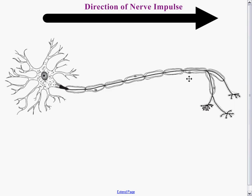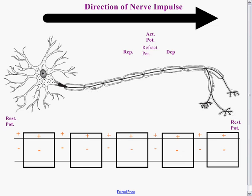Now how exactly does it speed up the nerve impulse? We can't work at that scale, so we're going to go to a different model. We've set up a diagram to represent the axon. Each one of these square boxes represents an individual piece of the myelin sheath — so each box is a separate Schwann cell. In between, we have areas not protected by a Schwann cell. These are known as nodes of Ranvier.